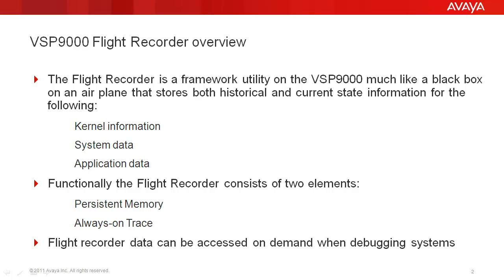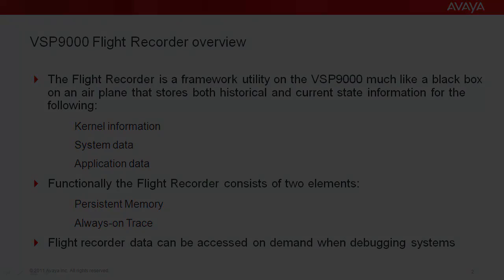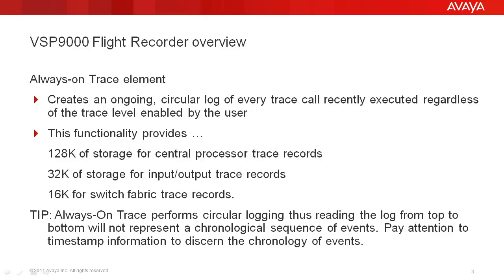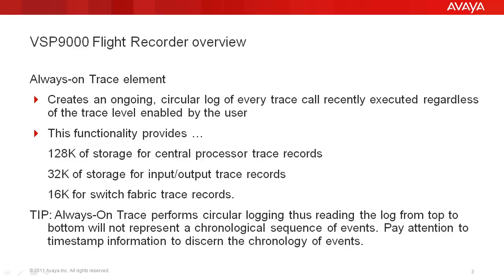The flight recorder data can be accessed on demand at any time when debugging the system. The always-on trace element of Flight Recorder creates a circular log of every trace call executed. This process is independent of the trace level enabled by the user. This allows for 128K of storage for central processor trace records, 32K for input-output trace records, as well as 16K of switch fabric records. Because the trace data performs circular logging, pay special attention to the timestamp in the log file.